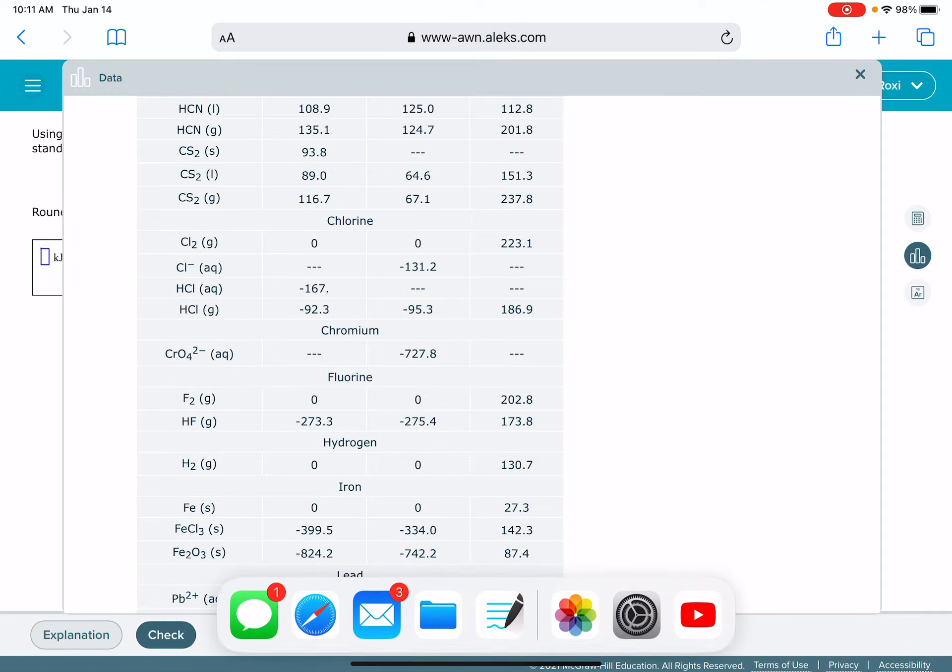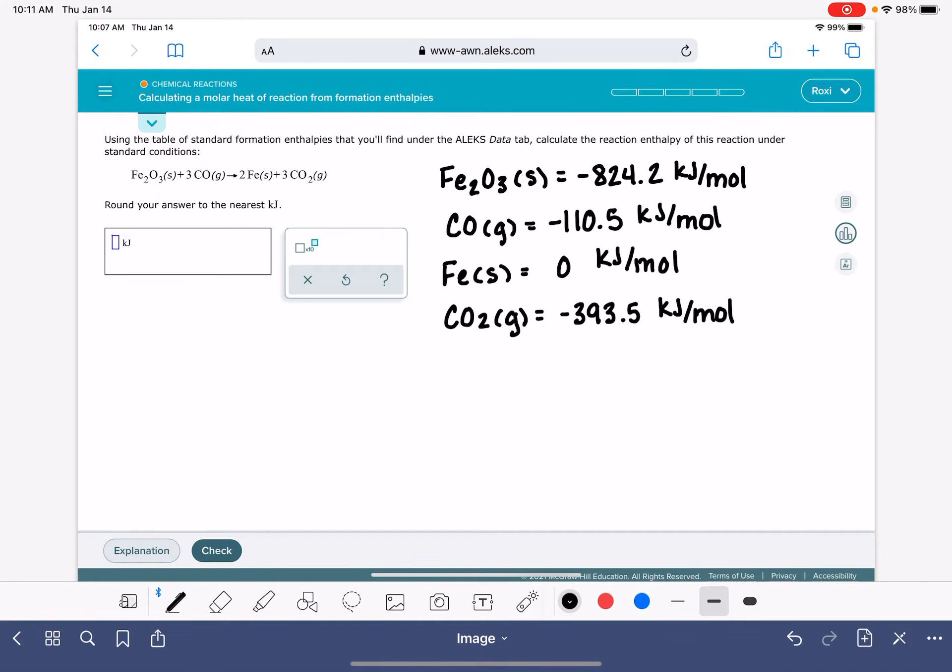So I have got all of the delta H values copied from ALEKS's table. This is the delta H values right there. Once you get all the delta H values tabulated for yourself, all the ones that are necessary, we're going to plug this into the equation products minus reactants. Products minus reactants is the equation that we use to calculate delta H using formation enthalpies.